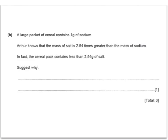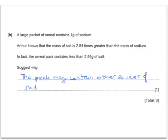A large pack of cereal contains 1 gram of sodium. Arthur knows the mass of salt is 2.54 times greater than the mass of sodium. However, the cereal pack contains less than 2.54 grams of salt — because the pack may contain other sources of sodium which aren't salt, such as other sodium compounds.